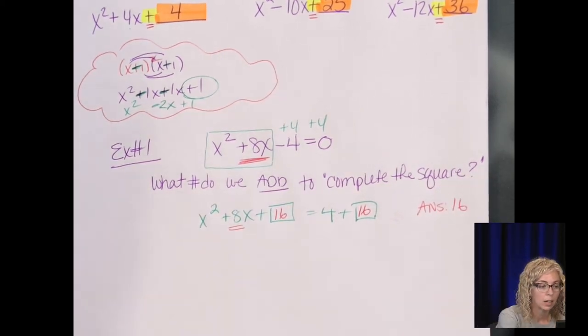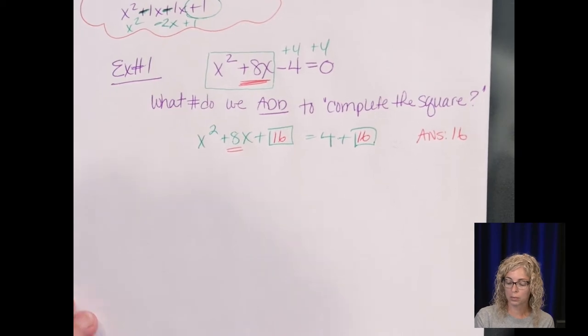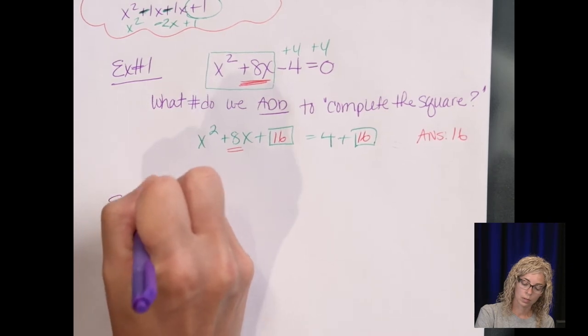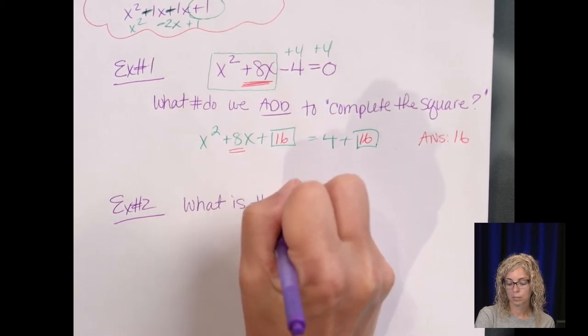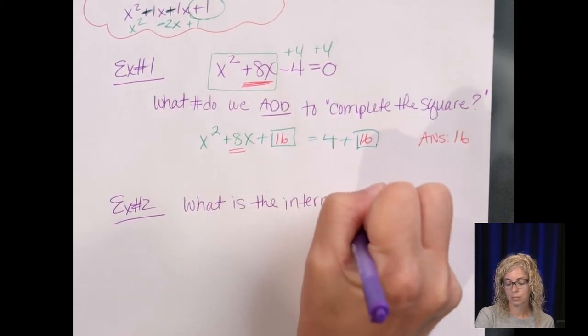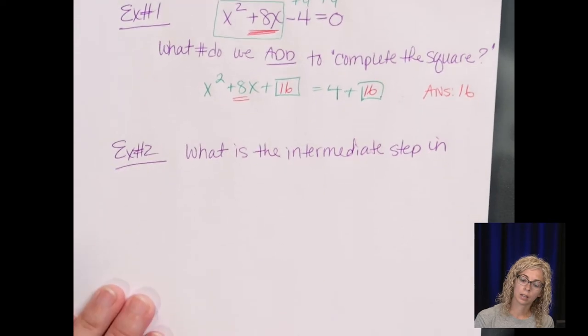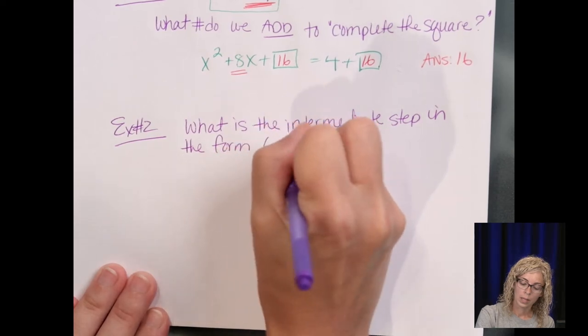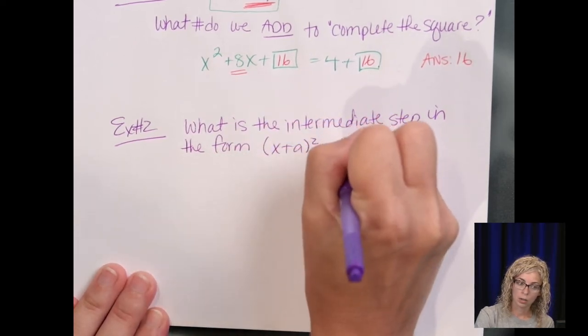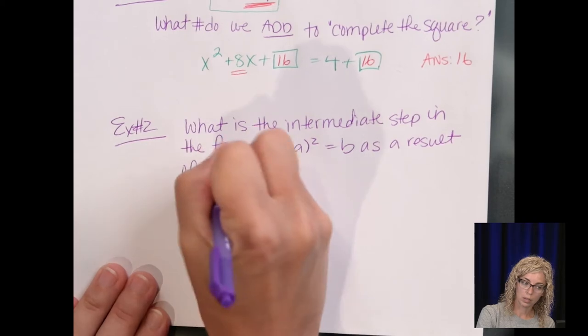In our next section, we're going to just rewrite it in the form of the square. So example 2, what is the intermediate step in the form x plus a squared equals b as a result of completing the square?